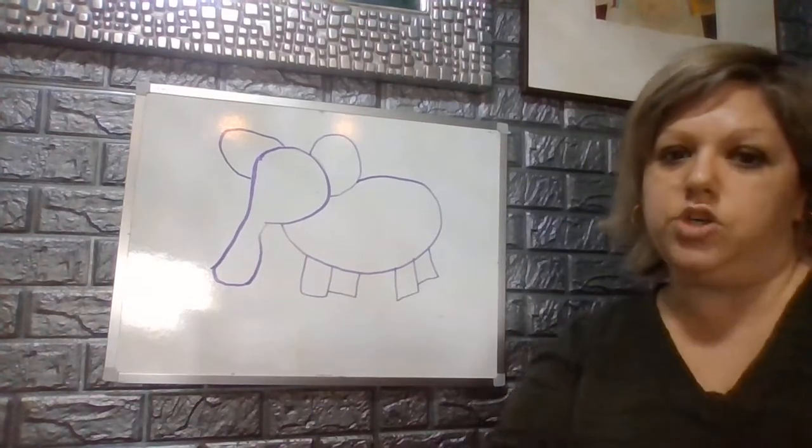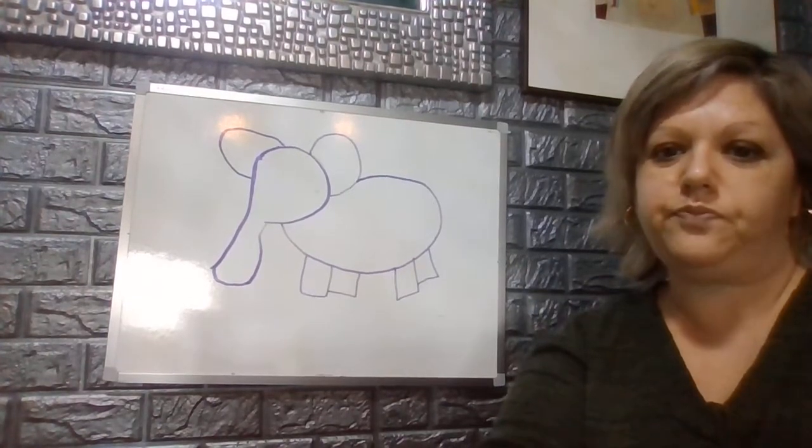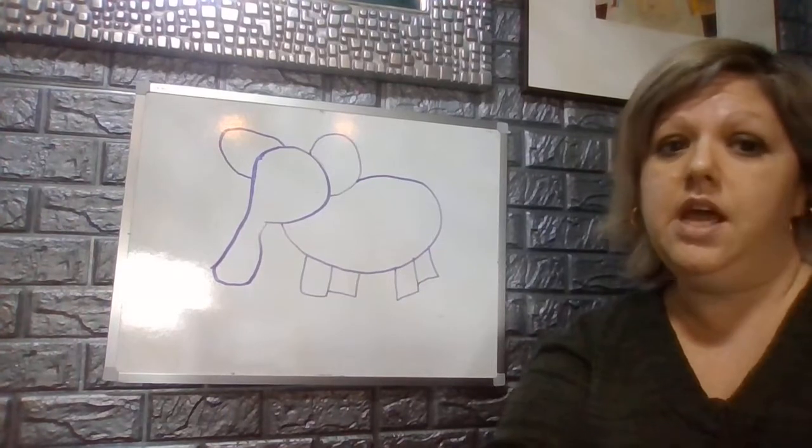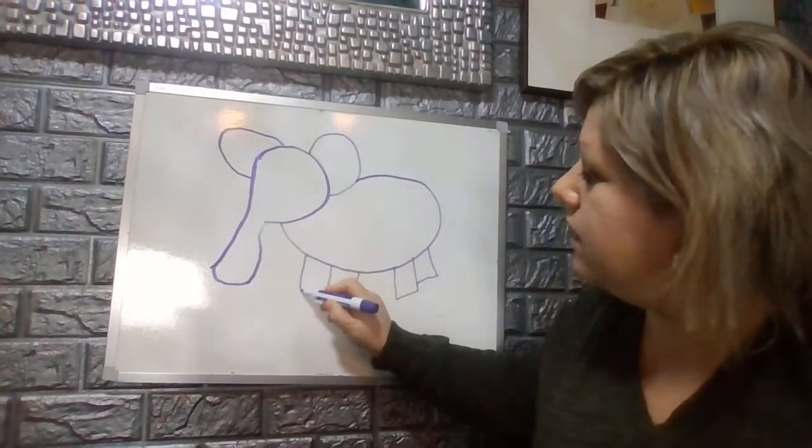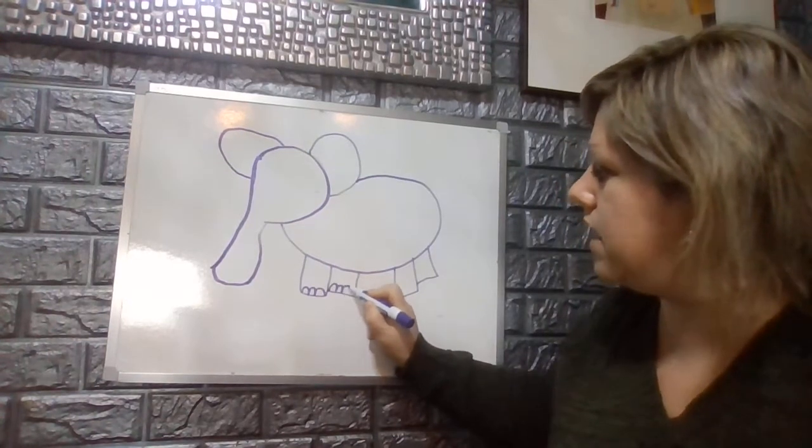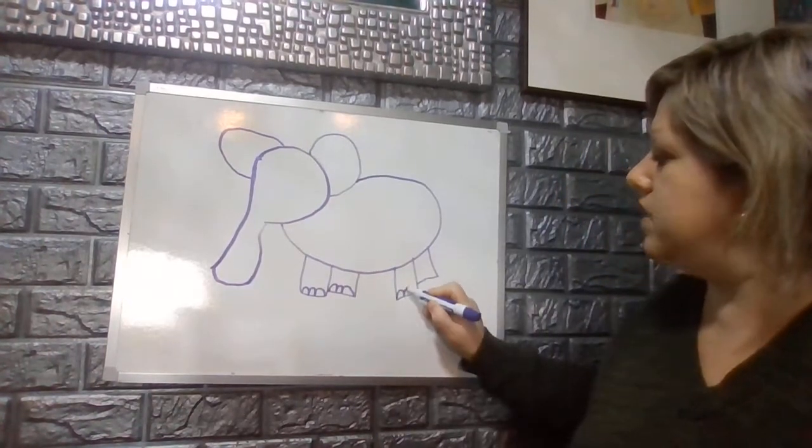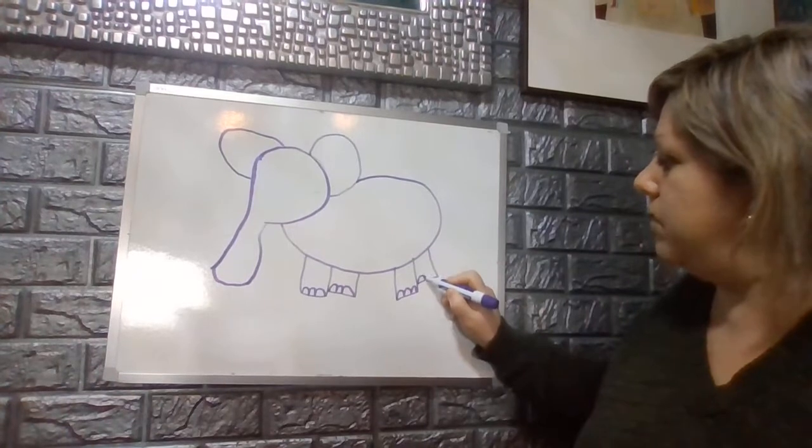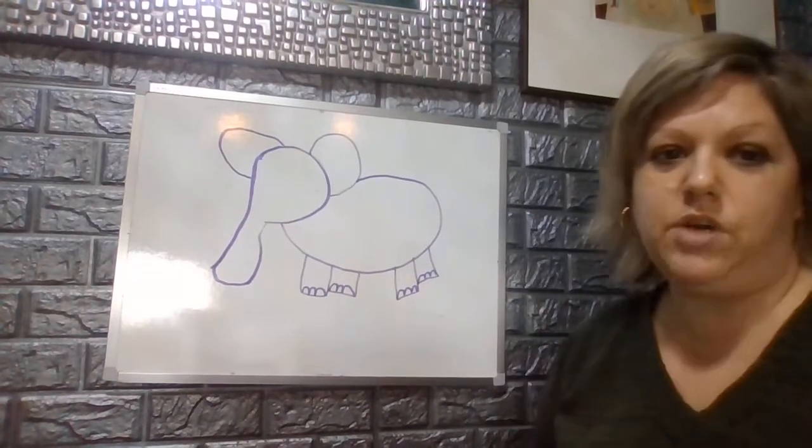So we have four large rectangles for his feet. Next we're going to make little hills, three of them, on each of the rectangles to show his nails on the bottom of his feet.